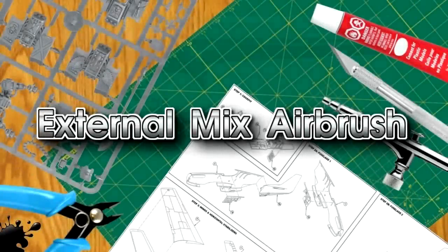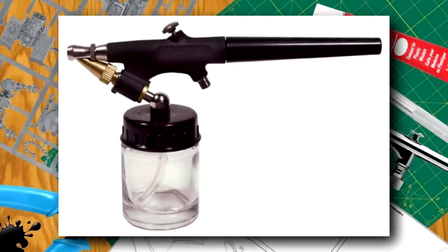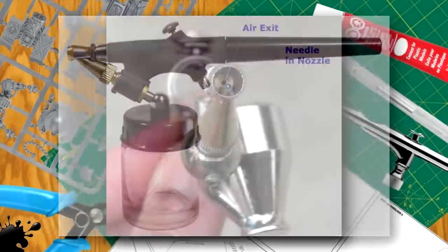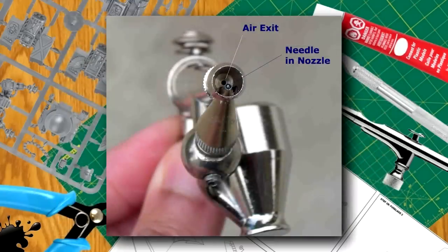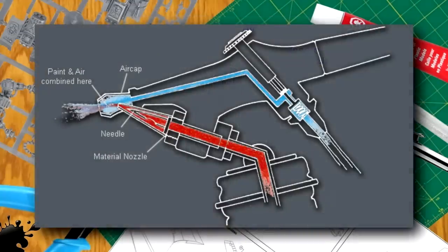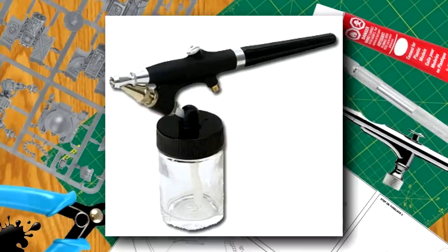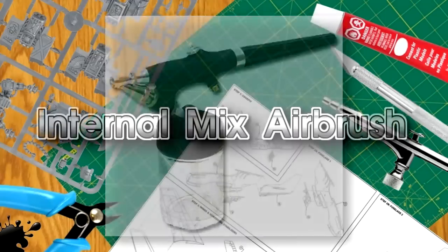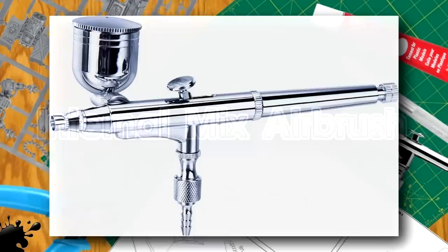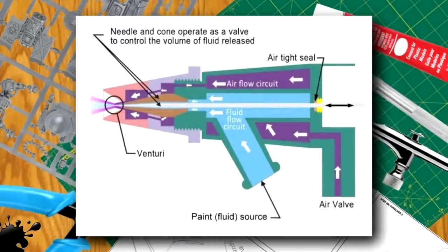External mix indicates that air and paint are mixed outside the airbrush. The air is directed over the top of a paint siphon, pulling the paint up and out. Air and paint come together outside the head. External mix airbrushes produce a larger dot spray pattern than internal mix airbrushes. Internal mix indicates that air and paint mix inside the airbrush. Air and paint mix together inside the head assembly or handle to produce a thoroughly atomized fine dot spray pattern.